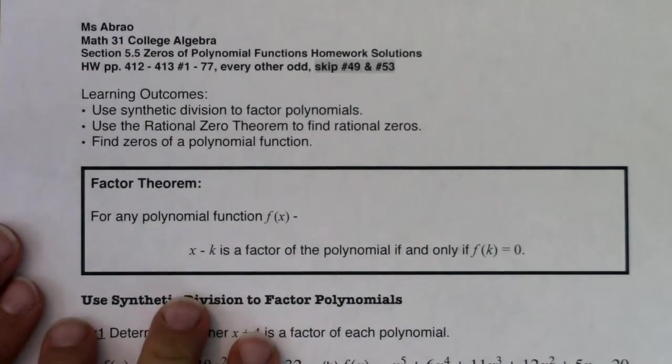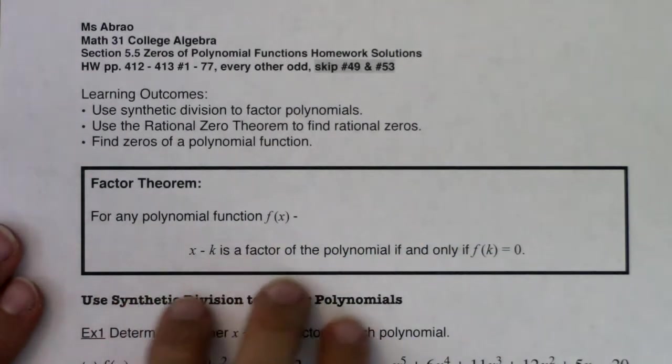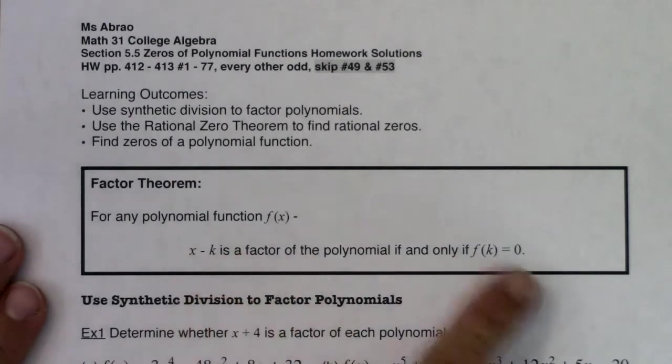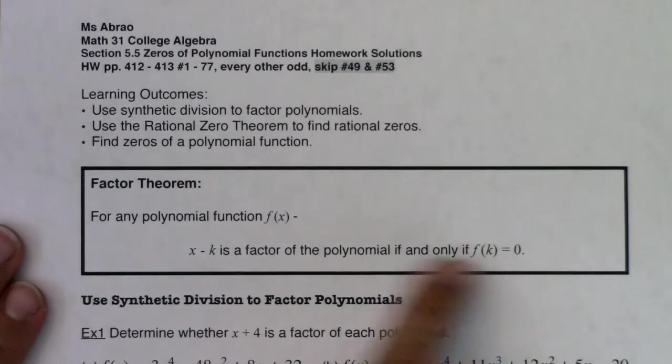So let's talk about the factor theorem. Believe it or not, you kind of know this concept, we just haven't seen it written up in theorem form. But this says for any polynomial function f, x minus k is a factor of the polynomial if and only if f of k is equal to zero. So you've seen this play out. If x minus k is a factor, that means k was a zero or an x-intercept of the polynomial. And when it says if and only if, you get it both ways. Meaning if x minus k is a factor, you know the function value at that k value is zero. And then if f of k is zero, then x minus k is a factor. So it goes both directions here.